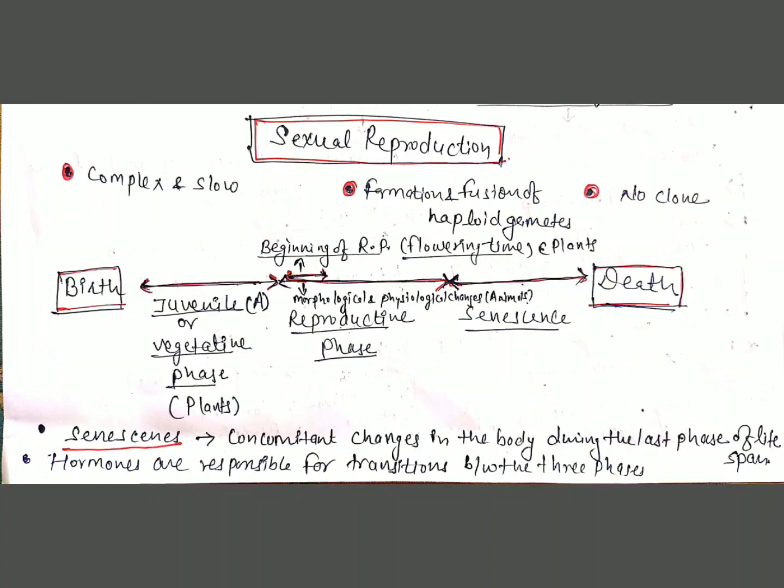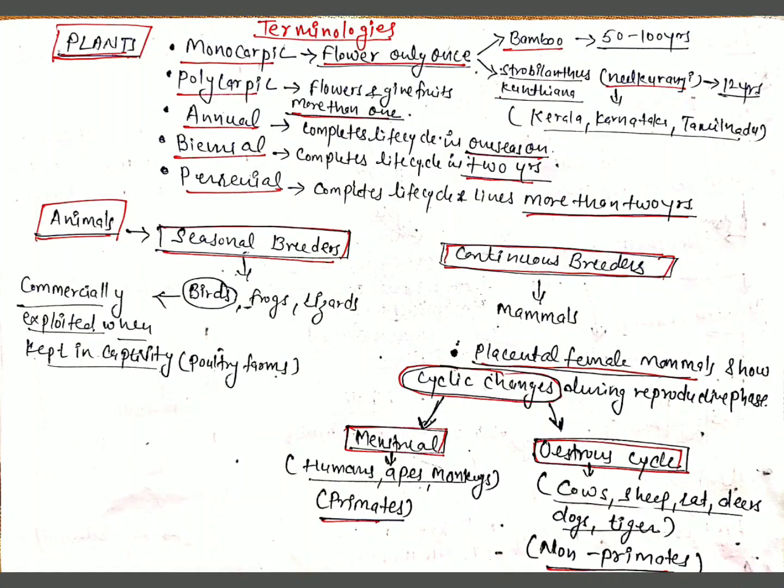In animals, some morphological and physiological changes are seen during the reproductive phase — for example in humans: in males, roughness of the voice and growth of hair; in females, development of the breasts. Next comes the senescence stage. The end of the reproductive phase can be considered one of the parameters of the senescence phase, during which natural changes occur in the body like slowing of metabolism.